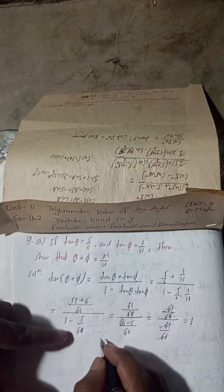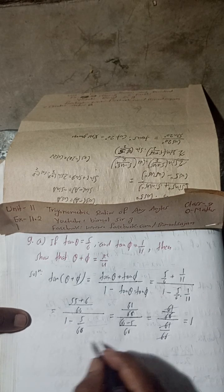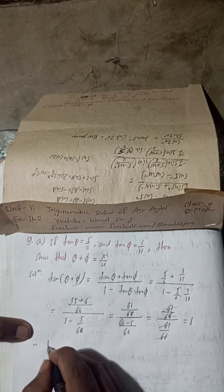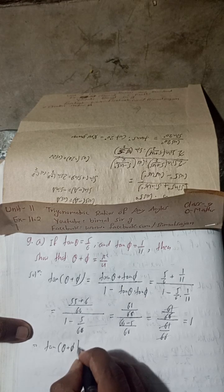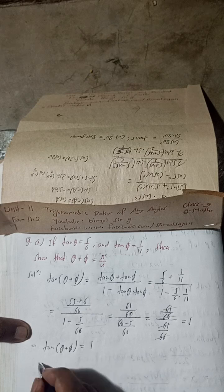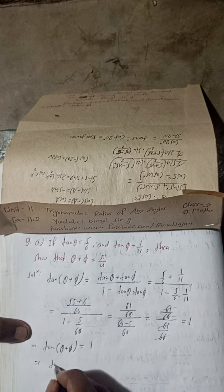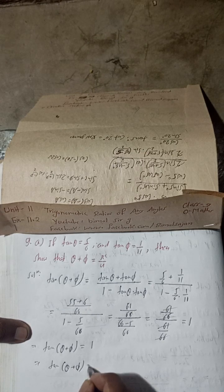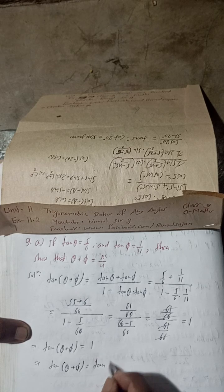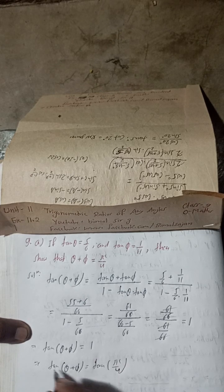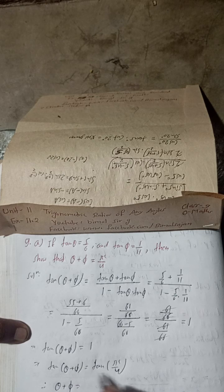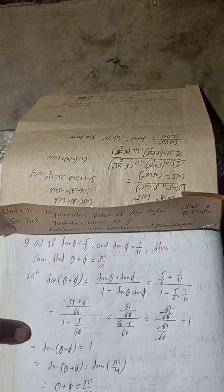The 61 and 66 cancel out, so tan(θ + φ) equals 1. This implies tan(θ + φ) = 1, which equals tan(π/4). Since both sides are tan, we cancel tan from both sides and get θ + φ = π/4 radians. Hence proved.